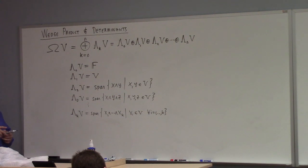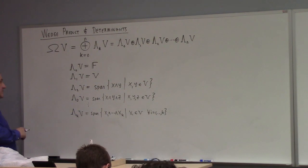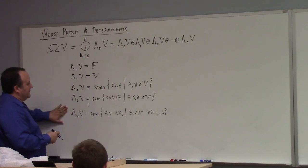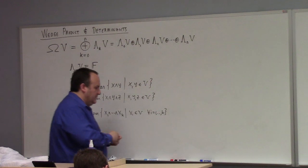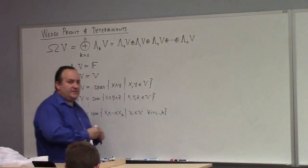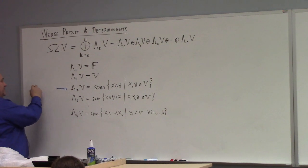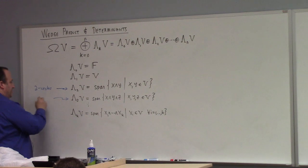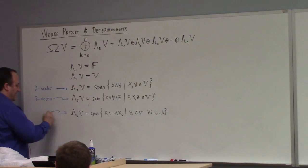In terms of terminology, lambda_2(V) would be the set of two-vectors, lambda_3(V) would be the set of three-vectors, and lambda_k(V) contains k-vectors. We define the wedge product on the direct sum of all of these things.